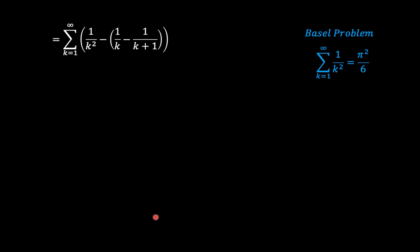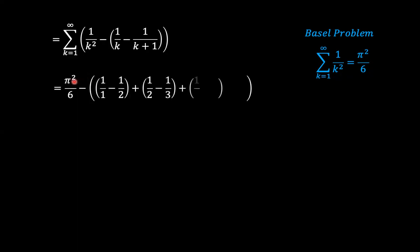We now invoke the Basel problem: the summation of 1 over k squared from k equals 1 to infinity equals pi squared over 6 — a well-known result. The first part becomes pi squared over 6. The second part is a telescoping series: 1 over 1 minus 1 over 2, plus 1 over 2 minus 1 over 3, and so on, which telescopes to leave only the initial term of 1. Therefore, the final answer is pi squared over 6 minus 1.